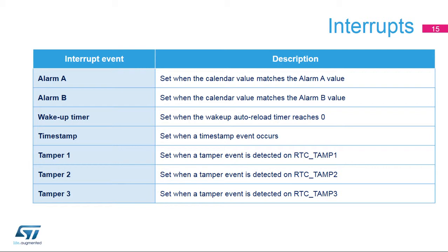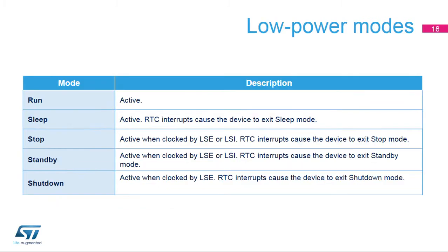The timestamp interrupt is set when a timestamp event occurs. The tamper 1, 2, and 3 interrupts are set when a tamper event is detected respectively on the RTC TAMP1, RTC TAMP2, or RTC TAMP3 pin. The RTC peripheral is active in all low-power modes and when triggered, the RTC interrupts cause the device to exit a low-power mode.